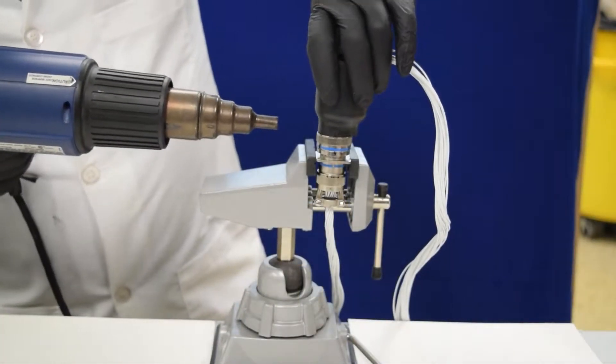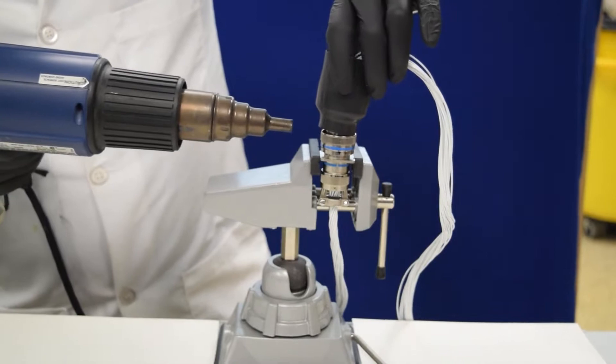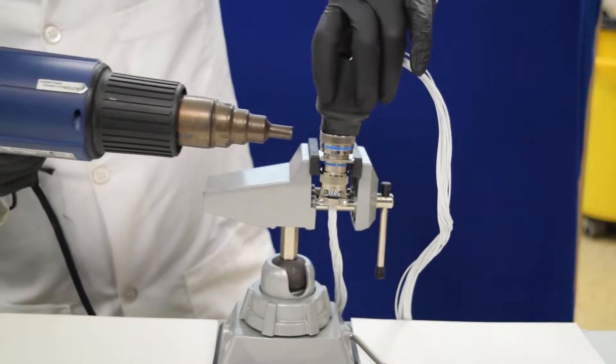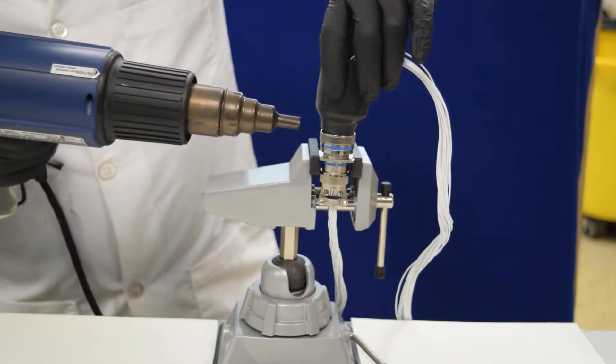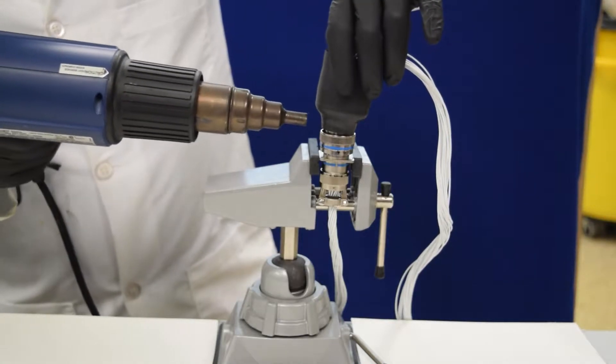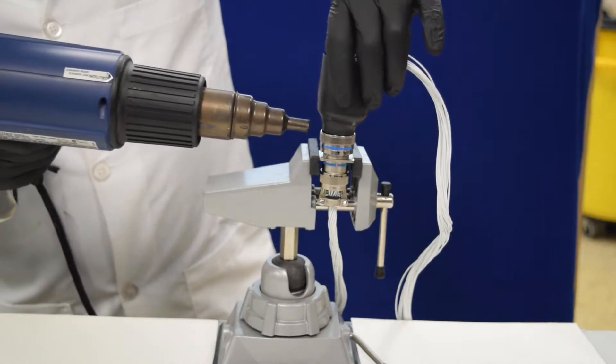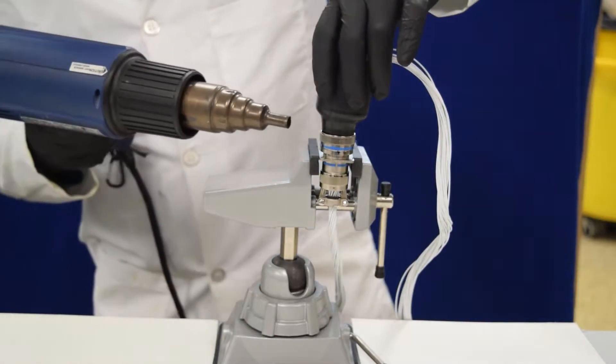Heat the H end of the boot with a hot air tool capable of producing sufficient heat to fully recover the boot. Focus the heat on the H end only until it shrinks uniformly around the connector back shell. Stop heating when the H end has completely recovered over back shell and allow boot to cool.